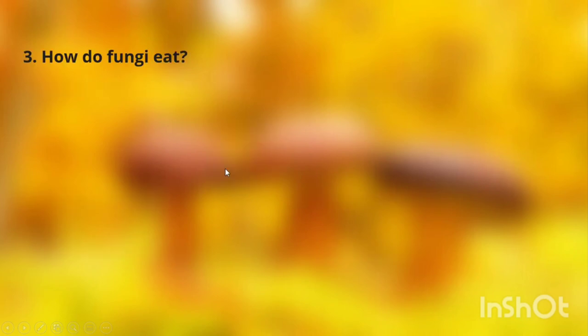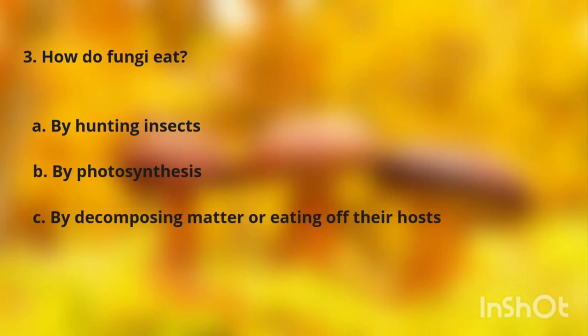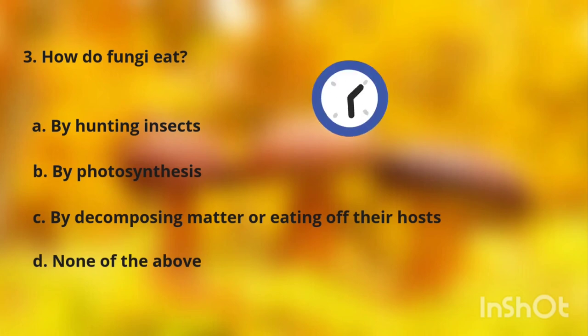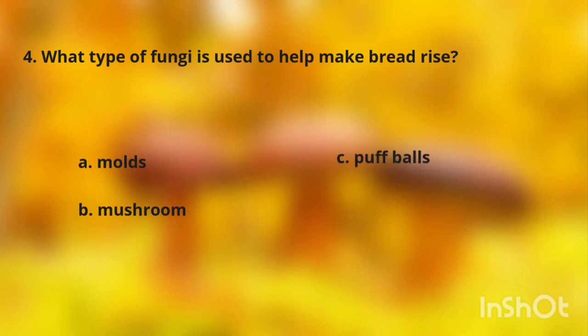Question three: how do fungi eat? A. By hunting insects, B. By photosynthesis, C. By decomposing matter or eating off their hosts, D. None of the above. Question four: what type of fungi is used to help make bread? A. Molds, B. Mushrooms, C. Puffballs, D. Yeast.